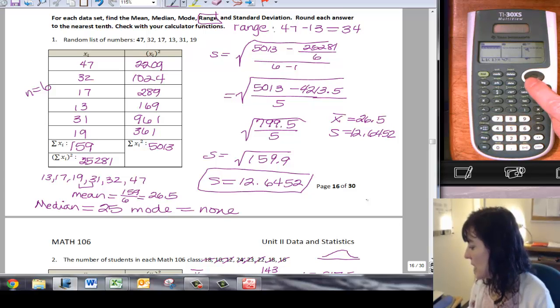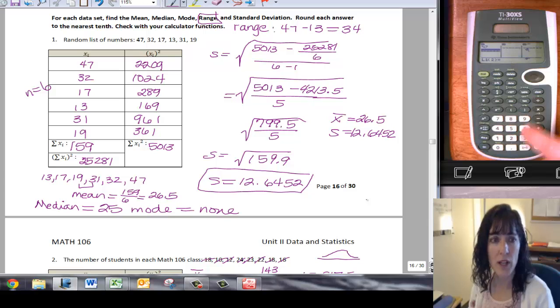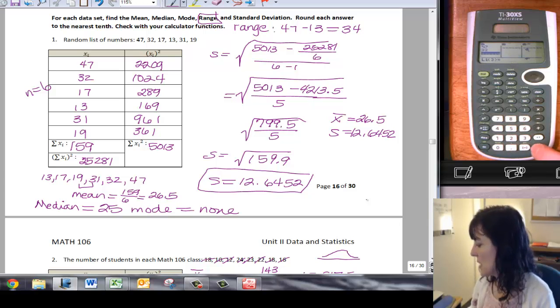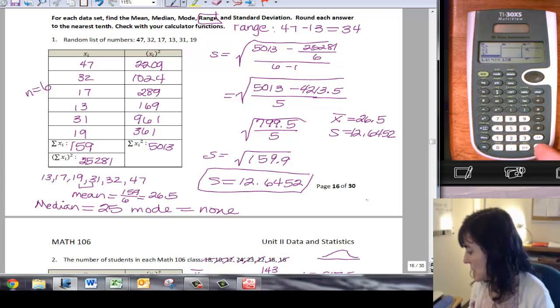So I have 47 and I can just use the down arrow or I can use the equals to get to the next item. I'm going to enter 32, and then 17, 13, 31, and 19.